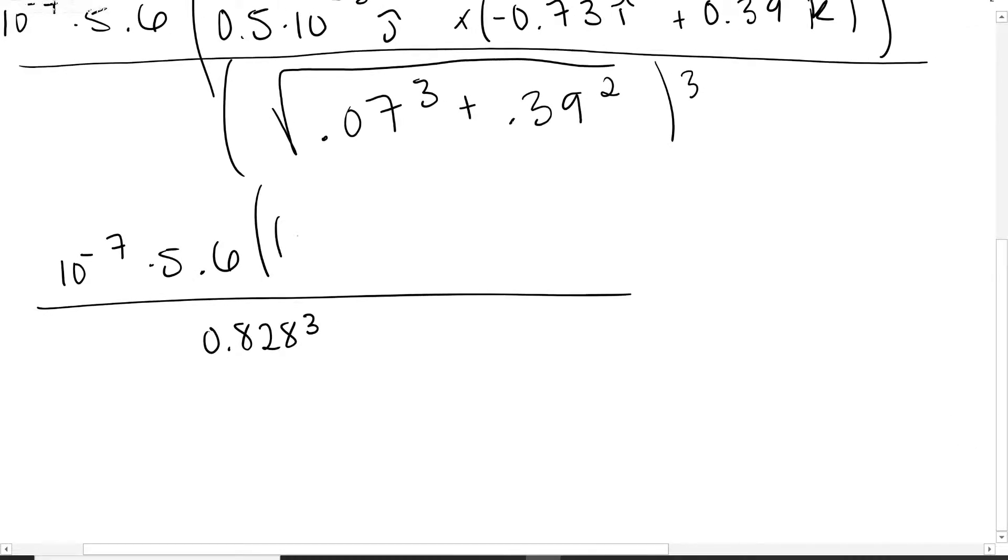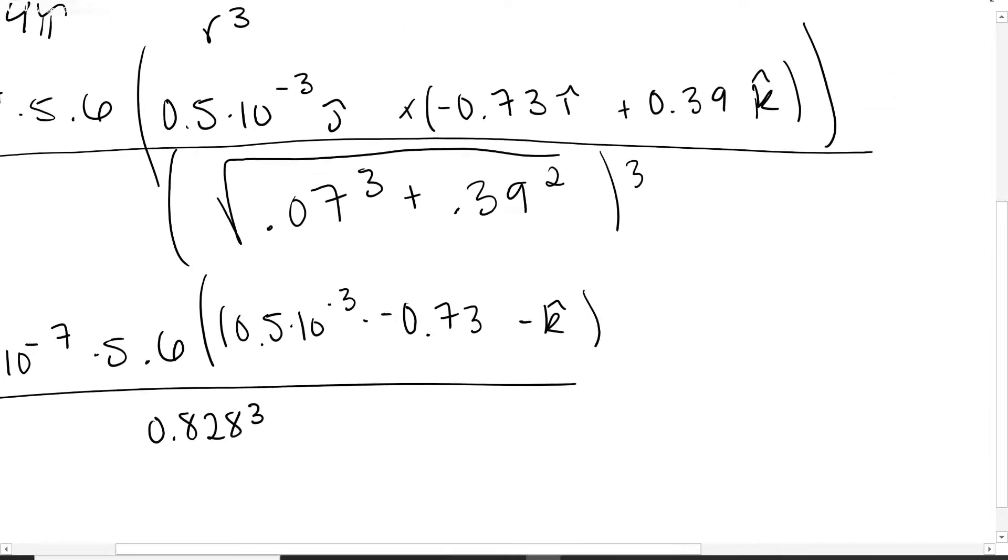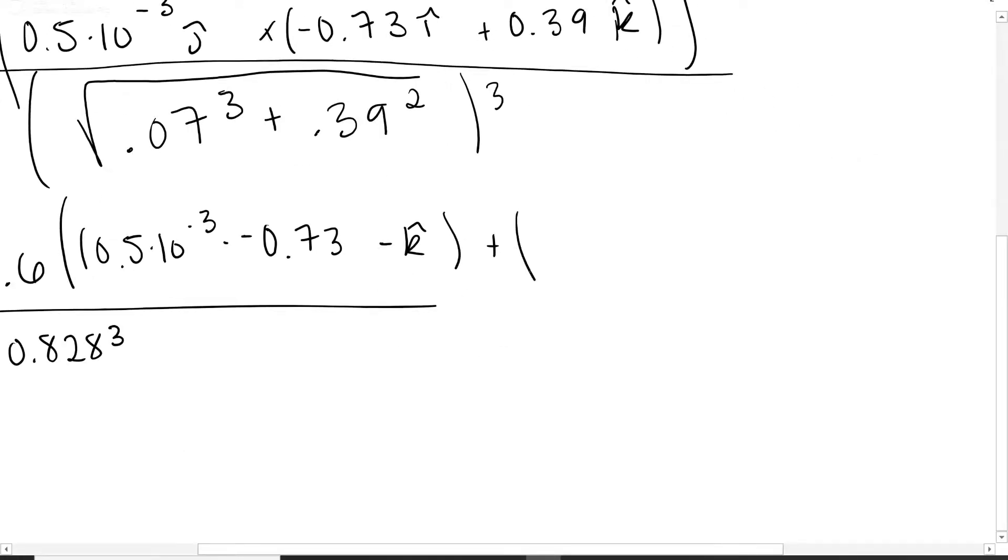We have 0.5 times 10 to the negative third times 0.73 in the negative k direction - that's j times i. j cross i is negative k because i cross j is positive k. Then we're adding the cross product of the second half: 0.5 times 10 to the negative third times 0.39. This time we have j cross k which gives you a positive i.